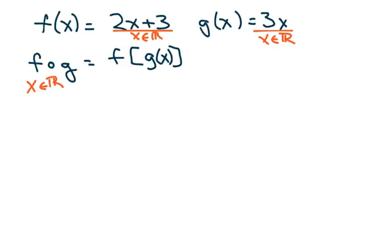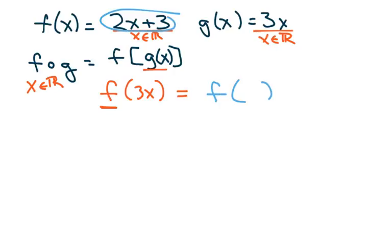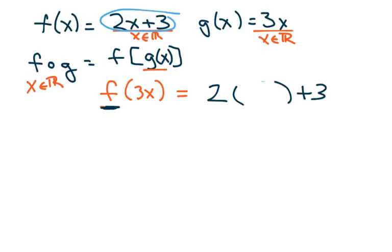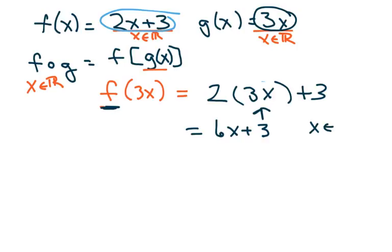When we compose, we're going to write f first, and g of x is 3x. So I write down my f, which is 2x plus 3, and everywhere there's an x, I put parentheses. I'm going to dump in g of x, which is 3x. I get 6x plus 3, and x belongs to all reals, because you have to state this each time.